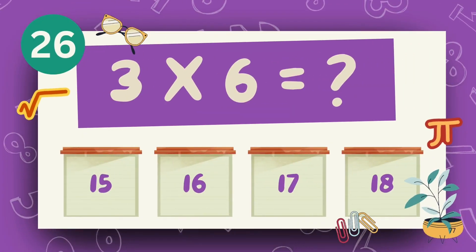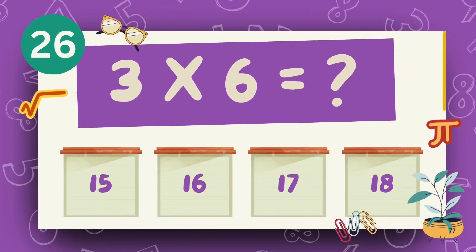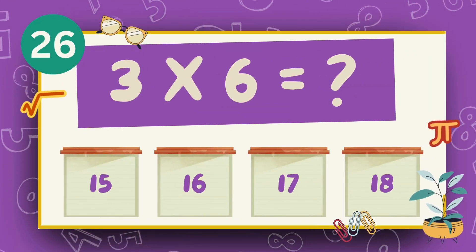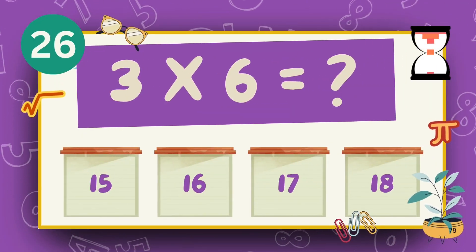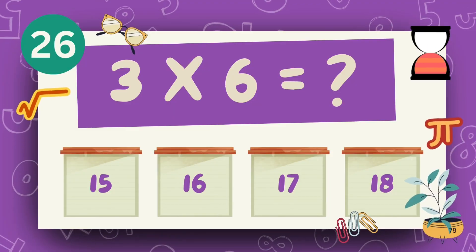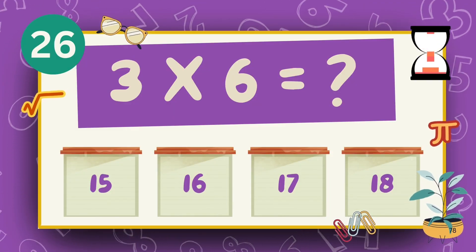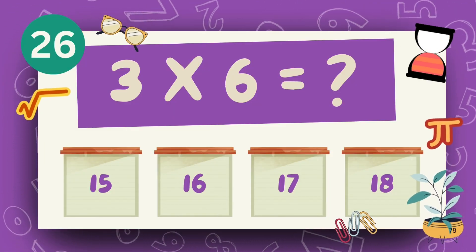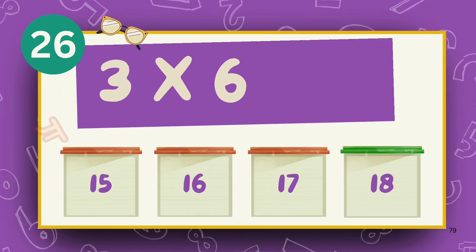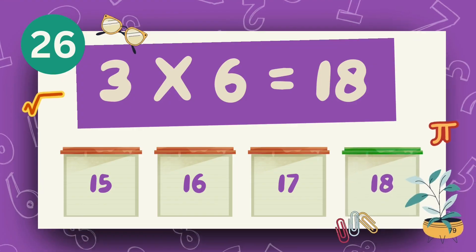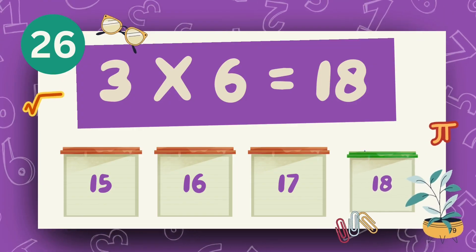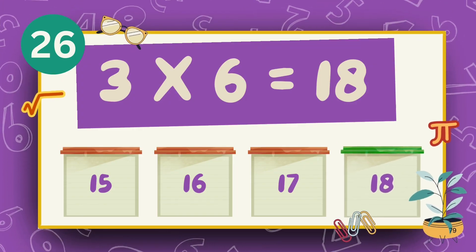What is 3 times 6? What is 6 times 6? The answer is 18.